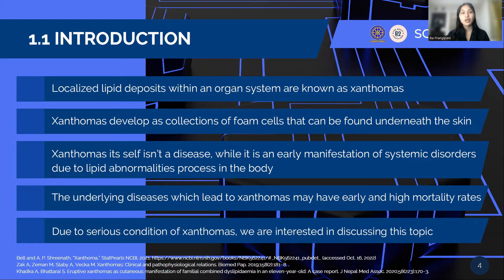There are many conditions that are said to be related to developing Xanthoma, such as diabetes, liver cirrhosis, pancreatitis, metabolic disorders, and also certain cancers. The underlying diseases which lead to Xanthoma may have early and high mortality rates. Therefore, an early diagnosis and immediate treatment of the underlying disease are needed to reduce the development of Xanthoma and reduce mortality and morbidity.